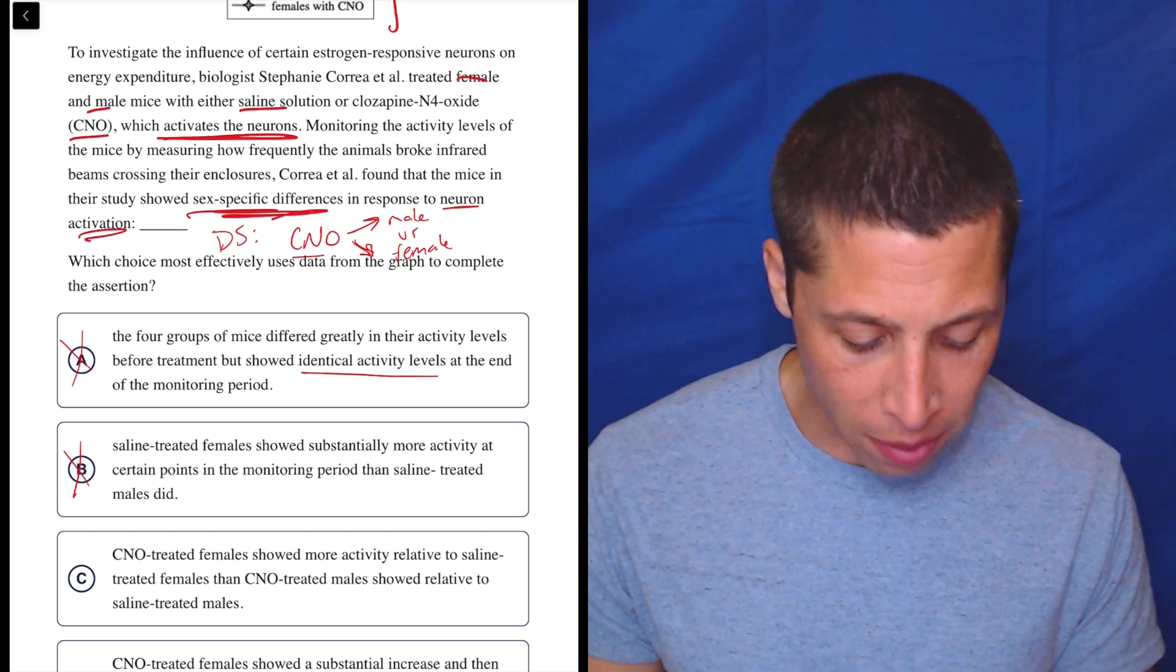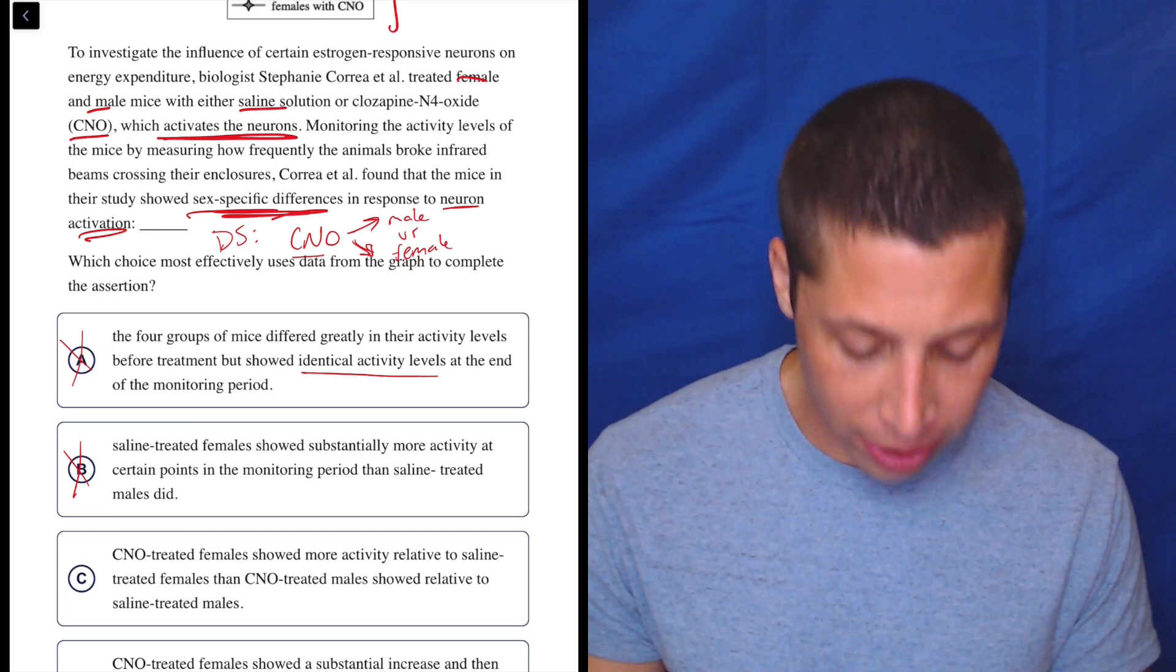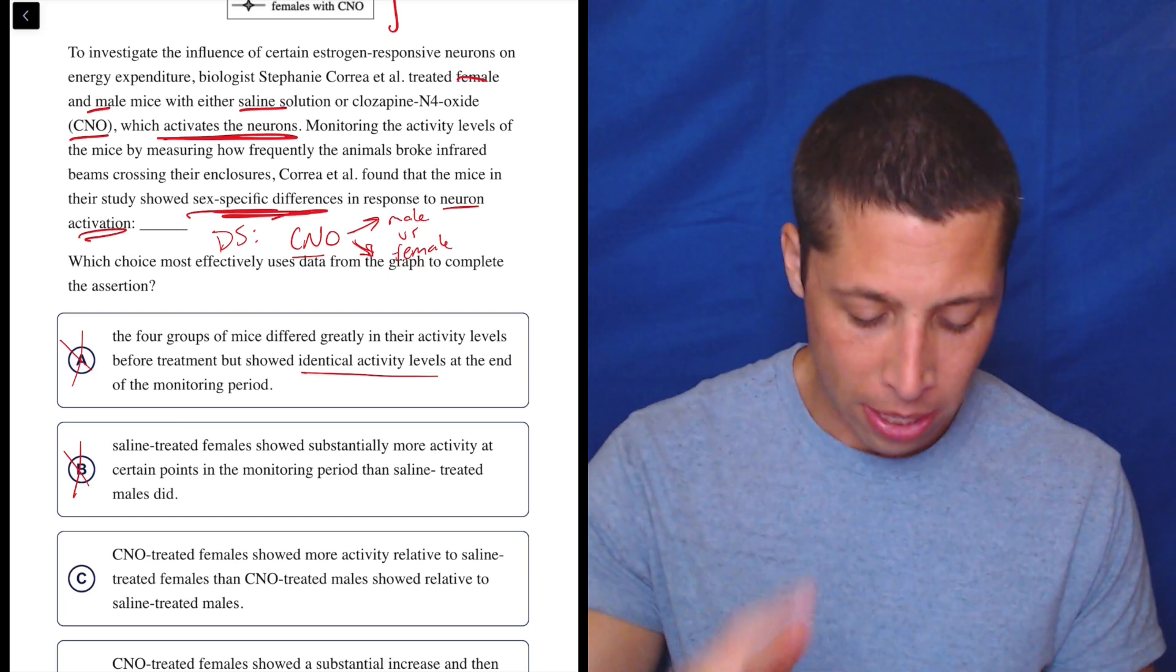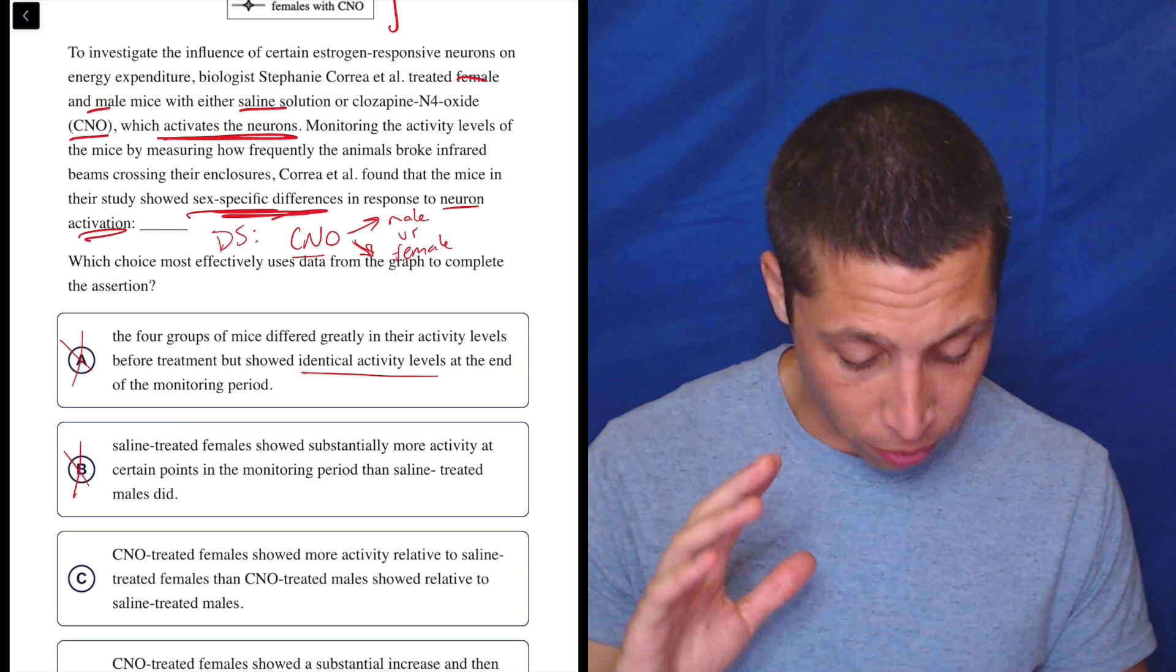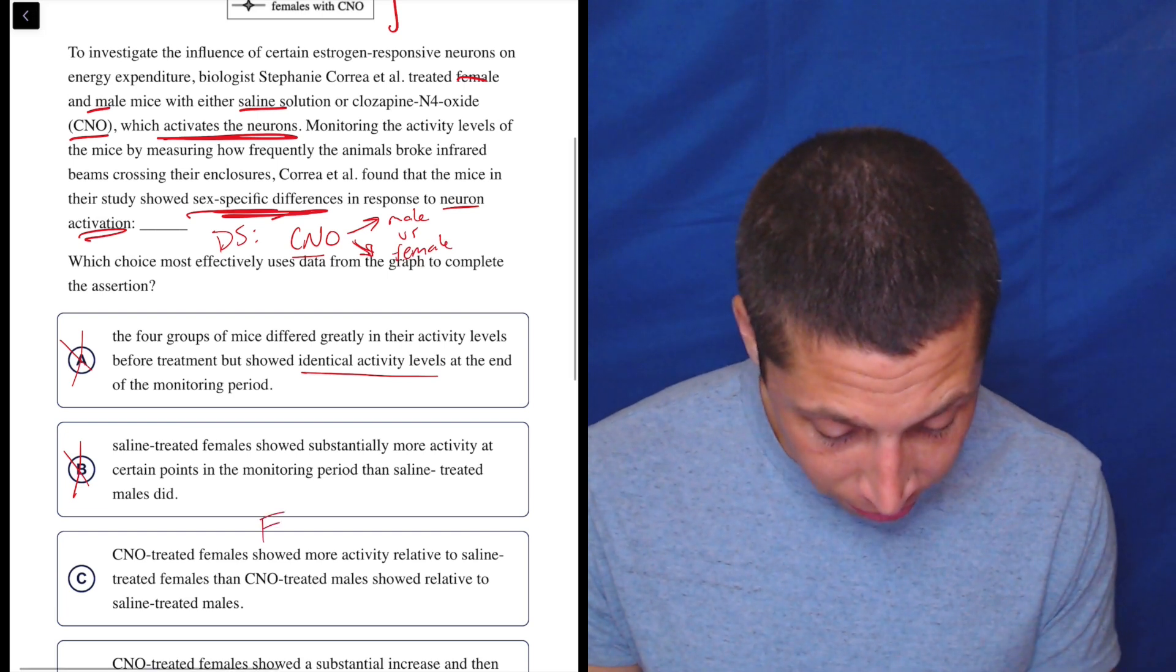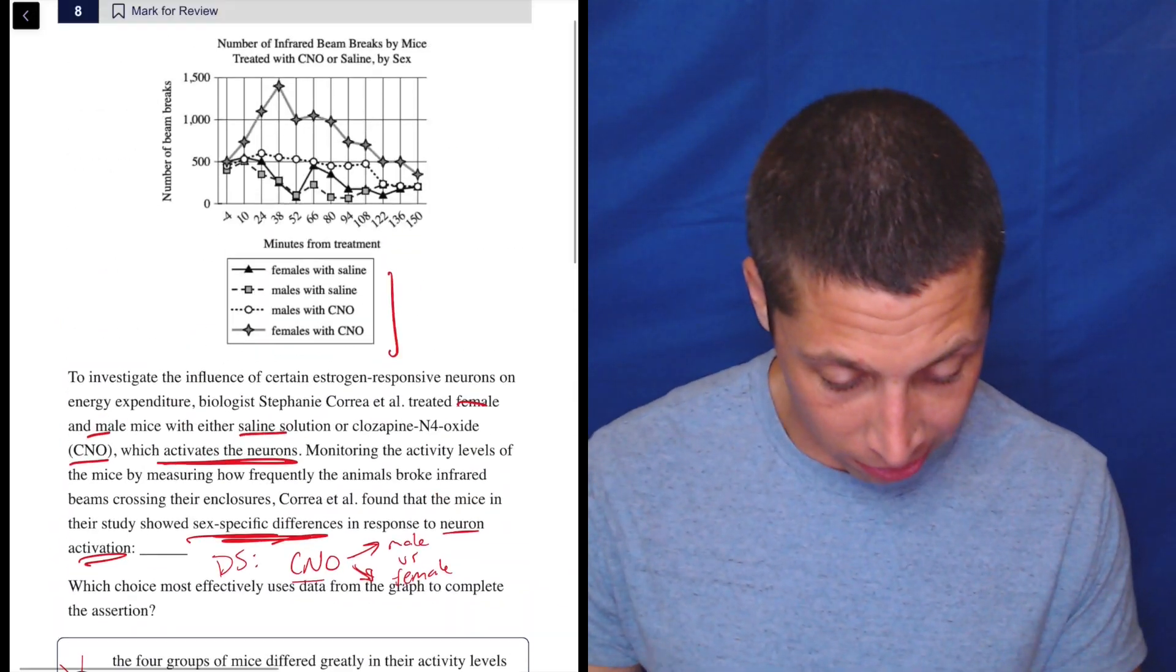Choice C, CNO treated females showed more activity relative to saline treated females than CNO treated males showed relative to saline treated males. Okay, so it's got all the pieces in here. So the females, this is saying females more than males. So let's see if that's true.